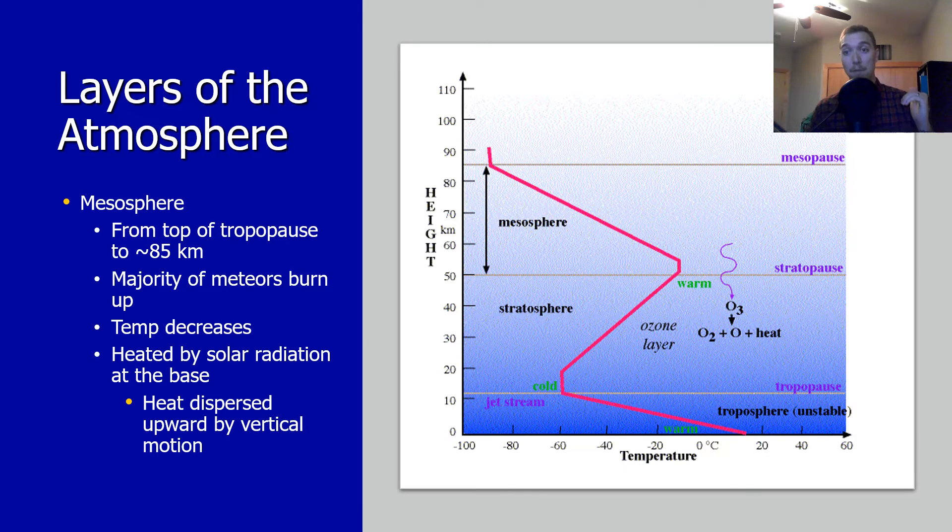The mesosphere extends from the stratopause to about 85 kilometers above the Earth. Gases, including oxygen molecules, continue to become thinner with height. The effect of warming by ultraviolet radiation becomes less and less, leading to decreasing temperature with height. On average, temperature decreases from about negative 15 degrees Celsius to as low as about 120 degrees Celsius at the mesopause. The gases in the mesosphere are thick enough to slow down meteorites hurtling into the atmosphere, often leading to them burning up before they get low enough to potentially harm us.